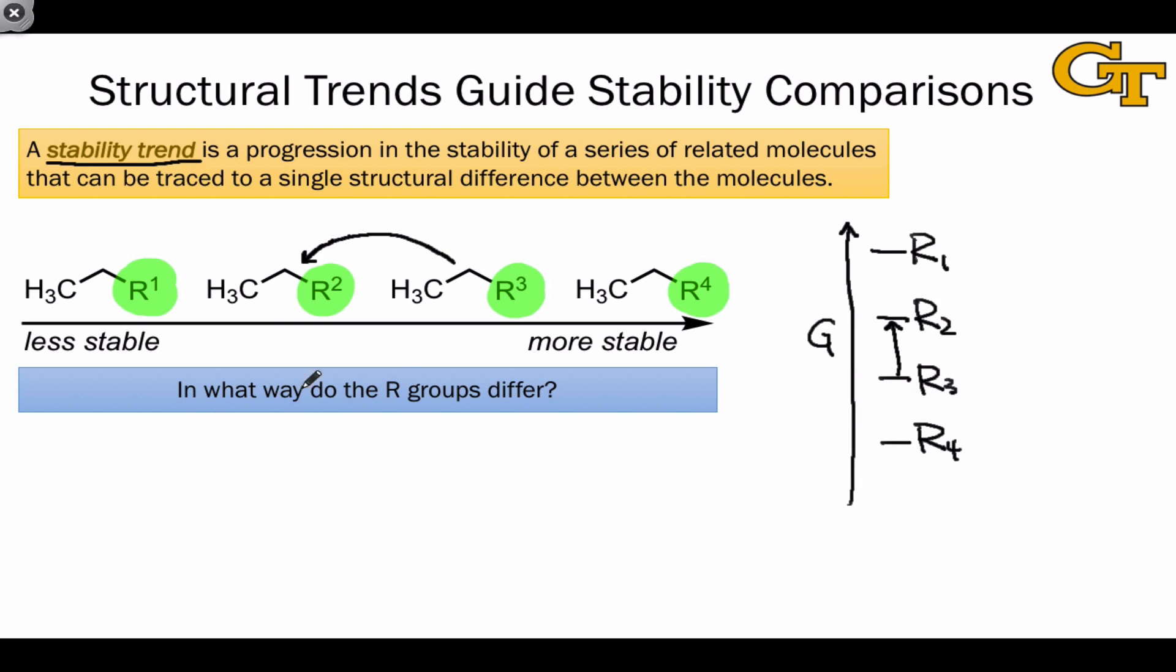By answering the question, in what way do the R groups differ, for example, in reactants and products, we see then that we can make a judgment about the thermodynamic favorability of the reaction. And there are a limited number of ways in which the R groups can differ. There are a limited number of stability trends.